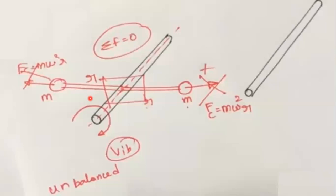Whenever a certain mass is attached to a rotating shaft it exerts a centrifugal force acting outwards, which tends to bend the shaft and produces vibration. To prevent this effect, another mass is attached to the opposite side of the centrifugal force so that there will be another centrifugal force acting in the opposite direction. This addition of mass will try to balance the system — this is the main aim.